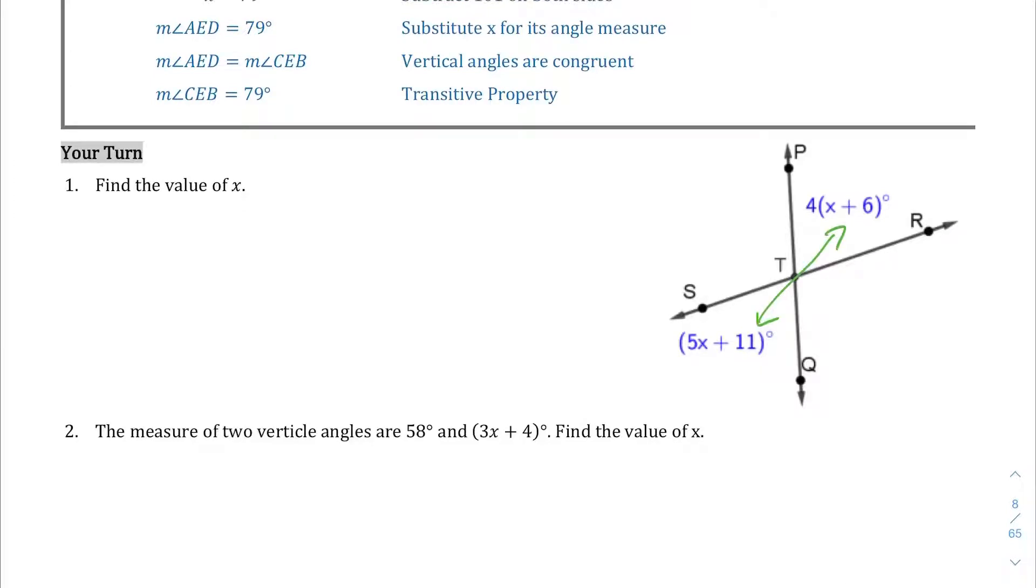that angle is equal to the other one. So let's set up the proper equation to find the value of x. We're going to do 4 times (x + 6) equals 5x + 11, and where I got those numbers were from right here. These are the two angles, they are equal to each other. Your algebra should tell you that when you have a 4 outside the parentheses like that, you're going to distribute that to the terms inside, and you end up with 4x + 24 equals 5x + 11.